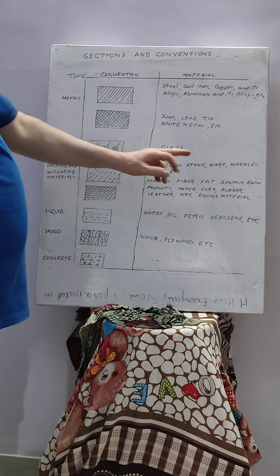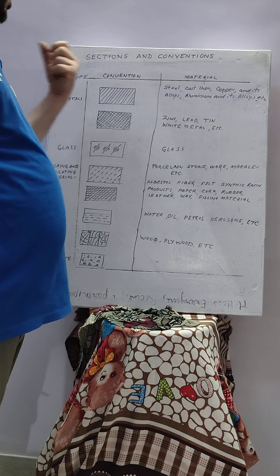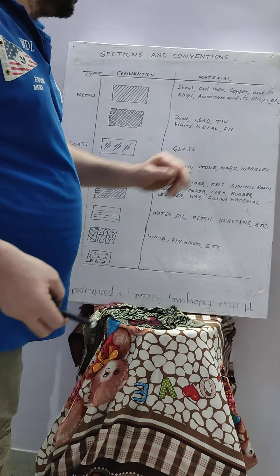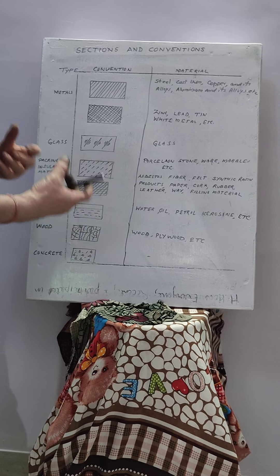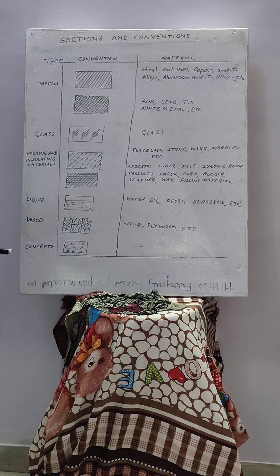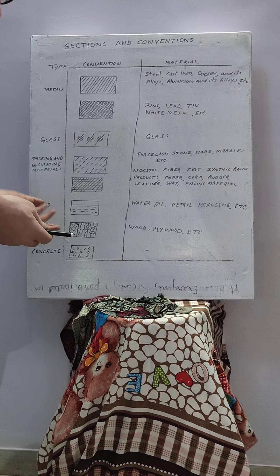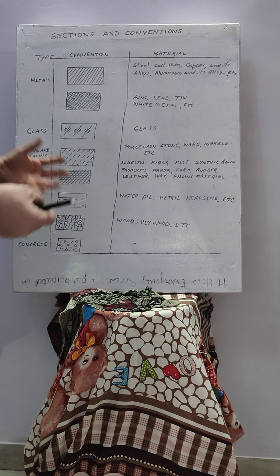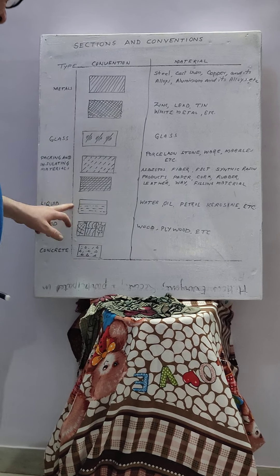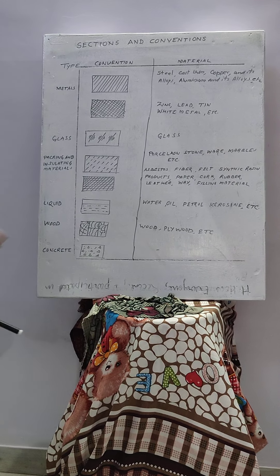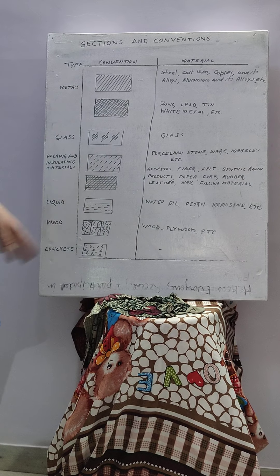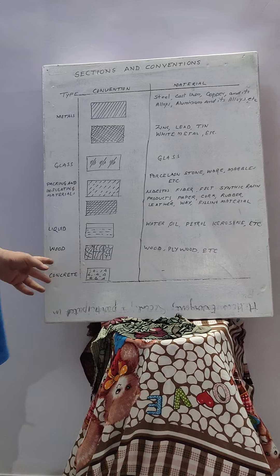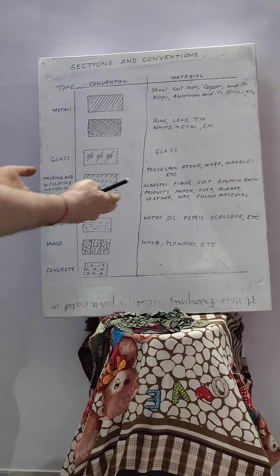In summary, the materials covered include leather, wax, filling materials, and liquids such as oil, petroleum, diesel, and kerosene. Also wood, and finally concrete and cement concrete. Thank you.